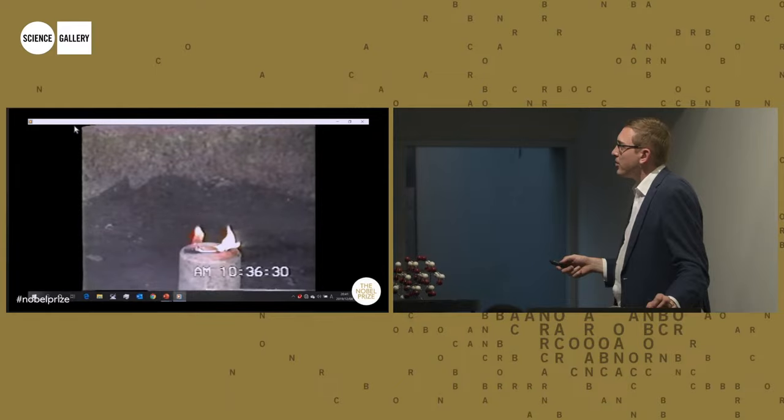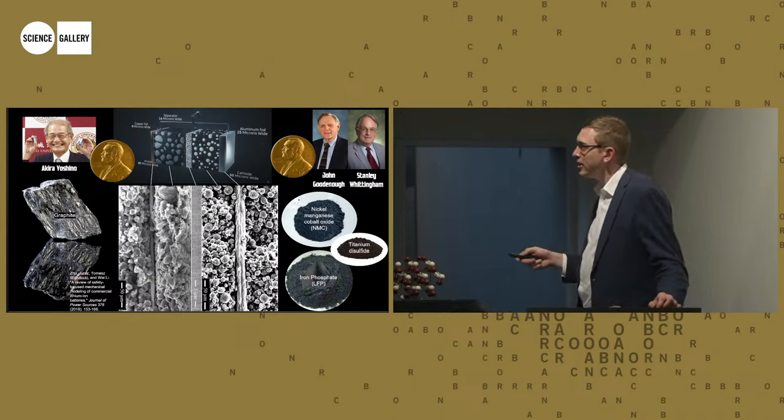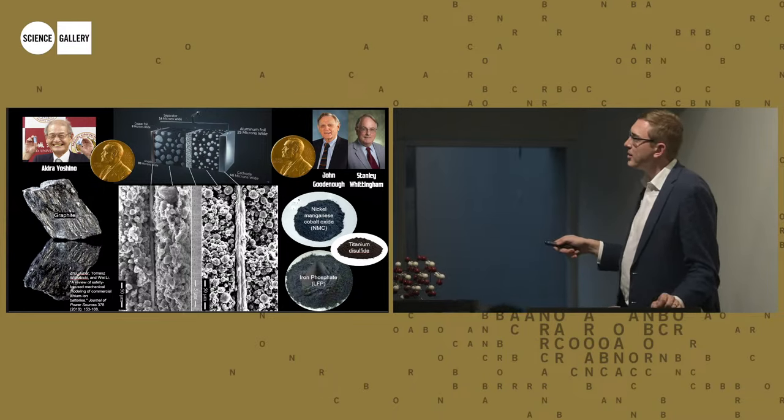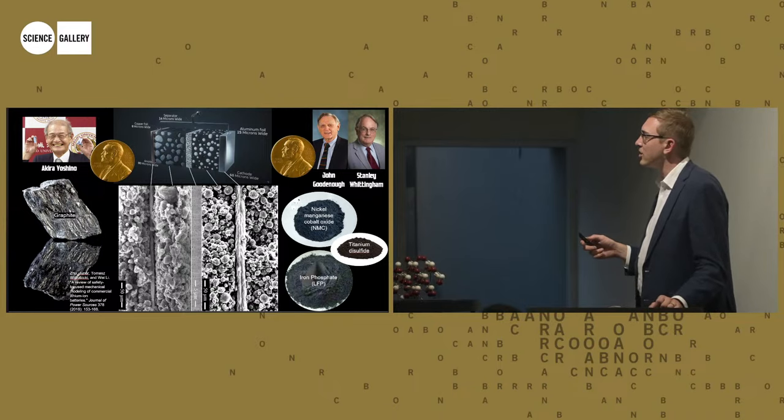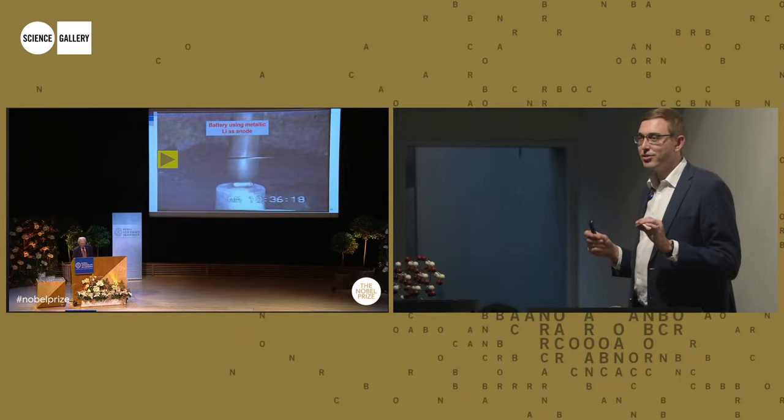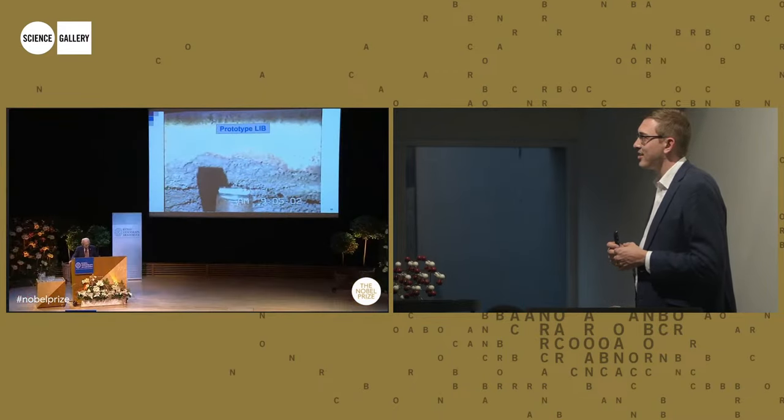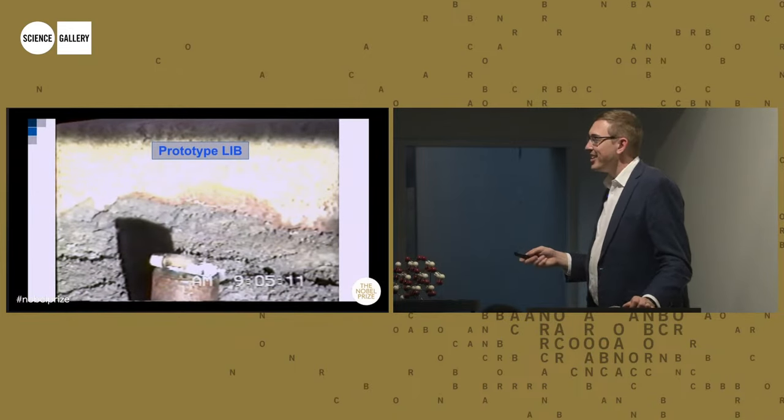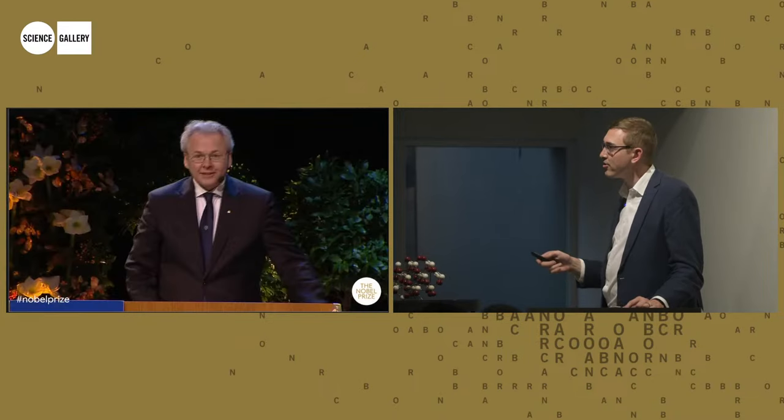So, what Akira Yoshino did, who was an industrial chemist in Japan, is he realised that he could put carbon into the battery. Initially it wasn't graphite, it was a type of semi-disordered carbon. But it was a carbon that was layered. And eventually, at the end of the 90s, the graphite replaced that. And so, on the other side of the battery, he added carbon, or graphite in this case. And this made the battery safe. So, this is the video he showed at his Nobel Prize lecture that convinced Sony to make lithium-ion batteries. So, this is the smash test with carbon in it.